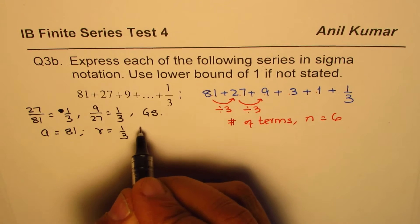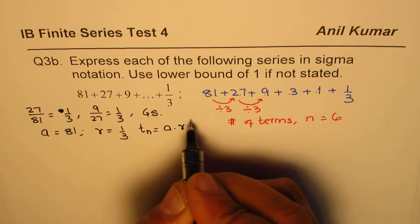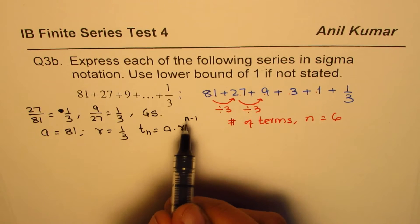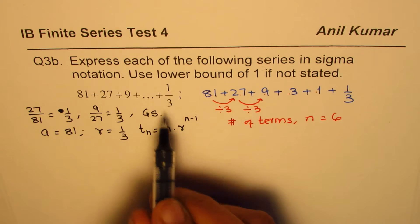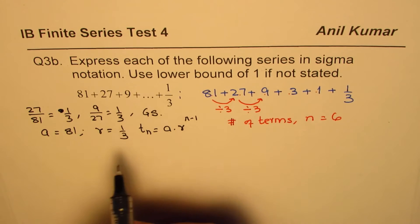And we know in geometric series, nth term is a times r to the power of n minus 1. So that helps to find the value of n. So the number of terms can be calculated from here. So we will use this formula and evaluate.